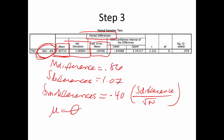We are assuming mu is zero, so we're testing if the mean difference here is different from zero — greater than zero in this case, because we're interested in whether new is greater than old. That's why I did new minus old: positive scores mean the first number is bigger. We also need N — there were seven people in this study.